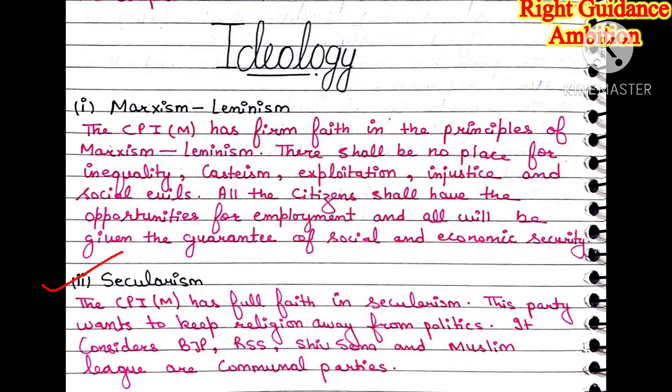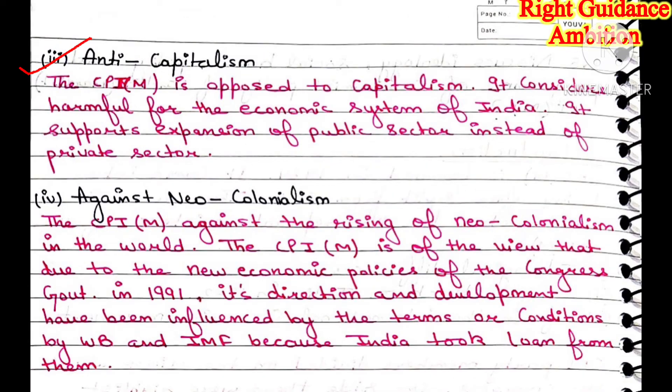Second point is secularism. CPIM has complete faith in secularism and wants that religion should always be separate from politics. According to CPIM, parties like BJP, RSS, Shiv Sena, and Muslim League are all communal parties — made on the basis of religion — and CPIM says it will not align with such parties. Third point is anti-capitalism. Capitalism means privatization, where the private sector is given more importance. CPIM considers this completely wrong and is opposed to capitalism, viewing it as harmful to India's economic system.